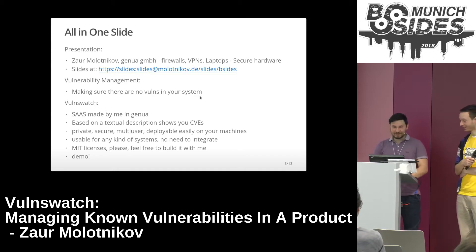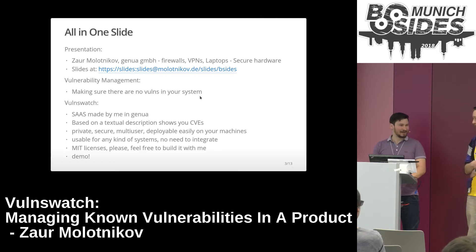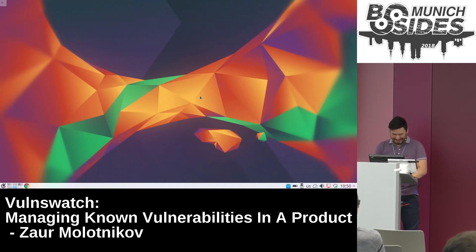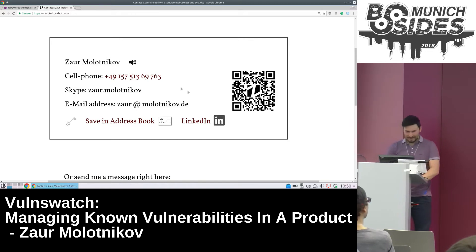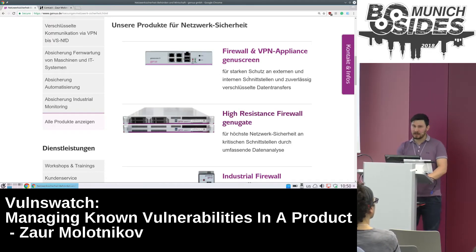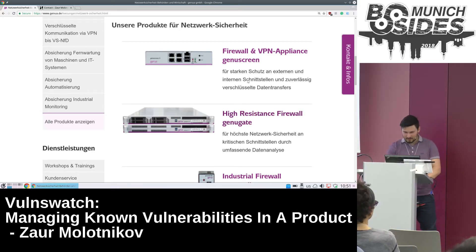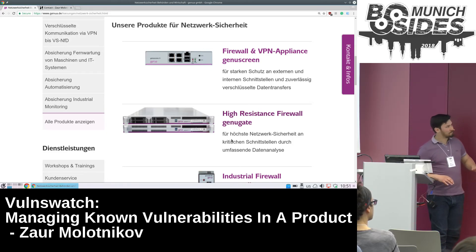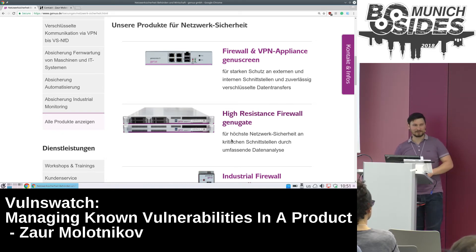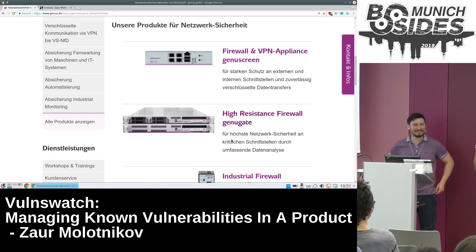Let me show the website of my company. Basically this is how German government class security looks like. For example, this thing — high resistance firewall Ganogate — is a very interesting product which indeed protects many data centers with stuff you don't want to leak.